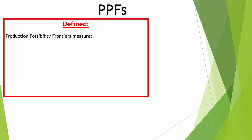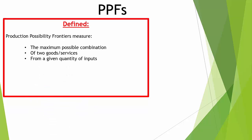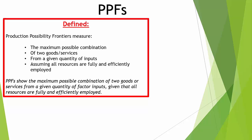We first have to define what a PPF is, because that will tell us what it does. In economics, PPFs measure the maximum possible combination of two goods or services from a given number of inputs — which we called factors of production — assuming that all resources are fully and efficiently employed. So PPFs show the maximum possible combination of two goods or services from a given quantity of factor inputs, given that all resources are fully and efficiently employed.